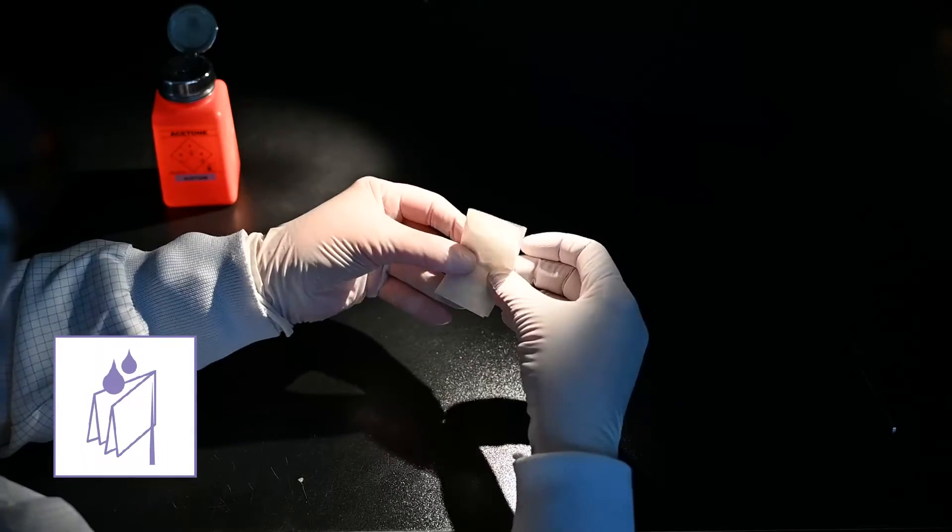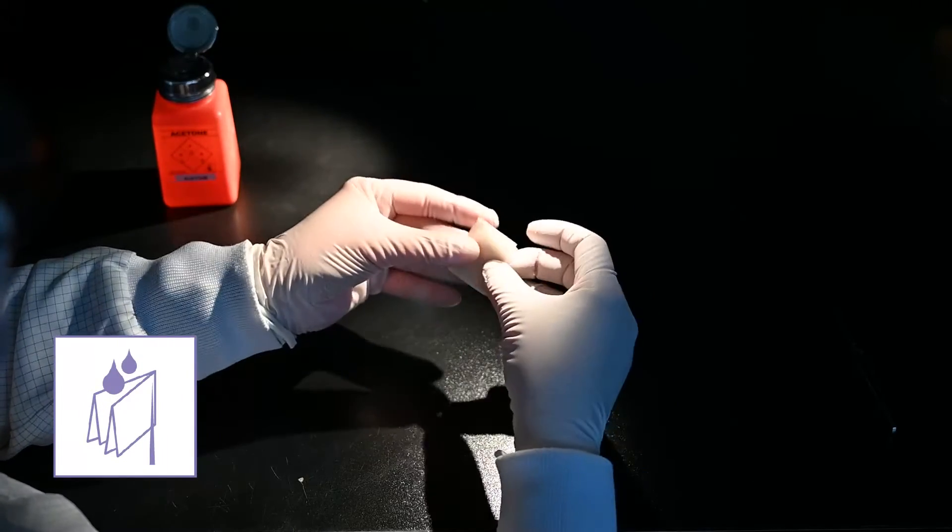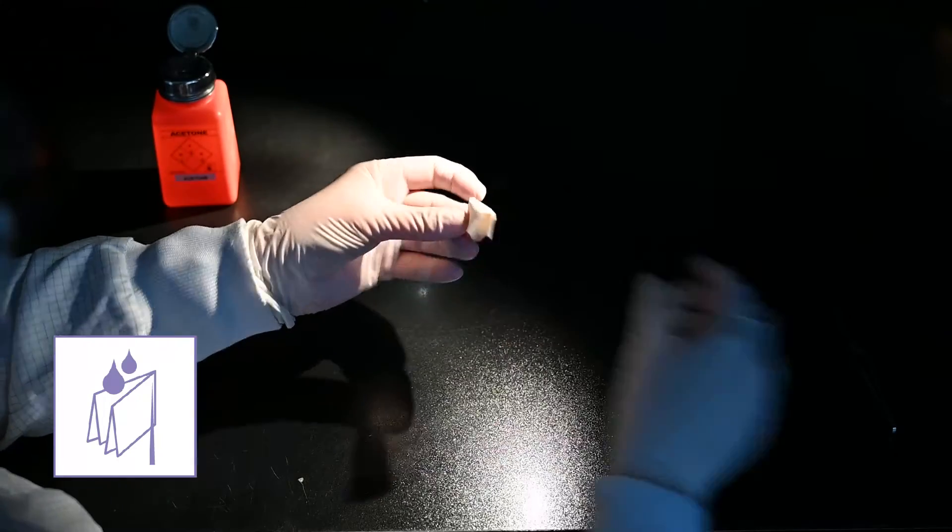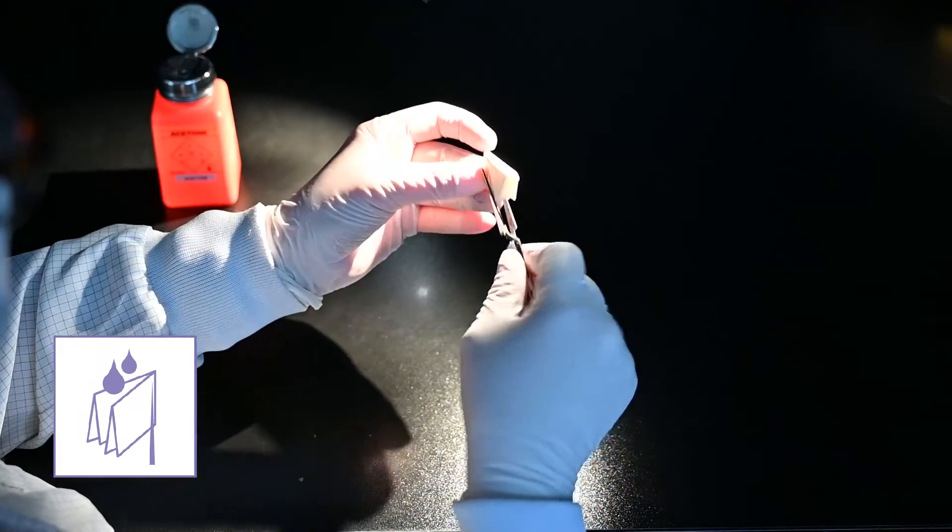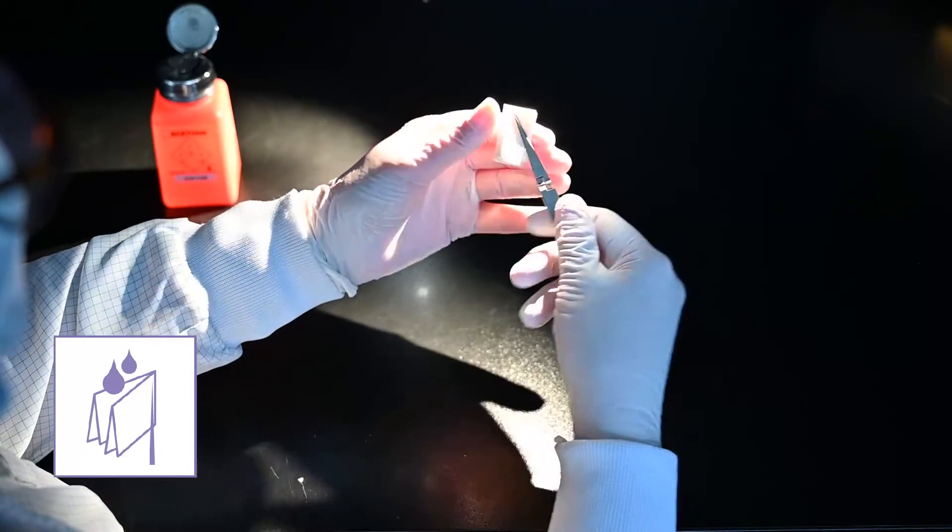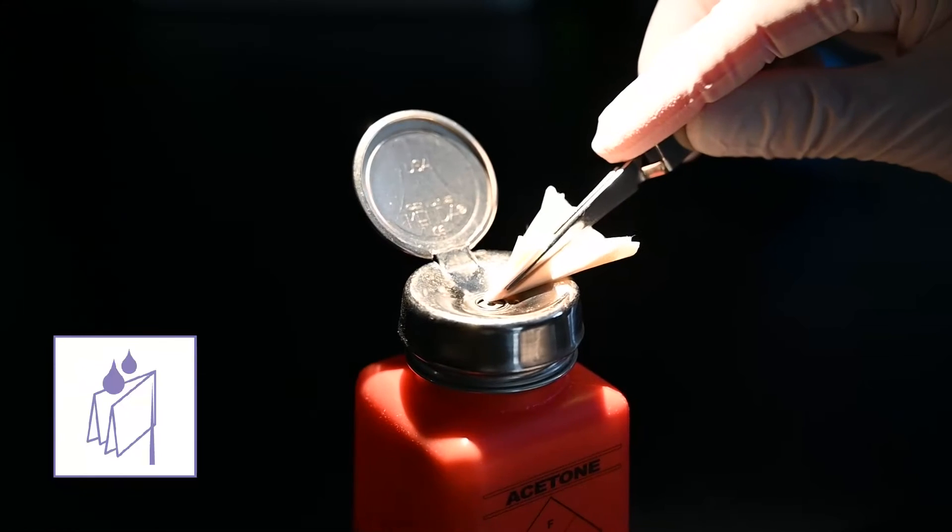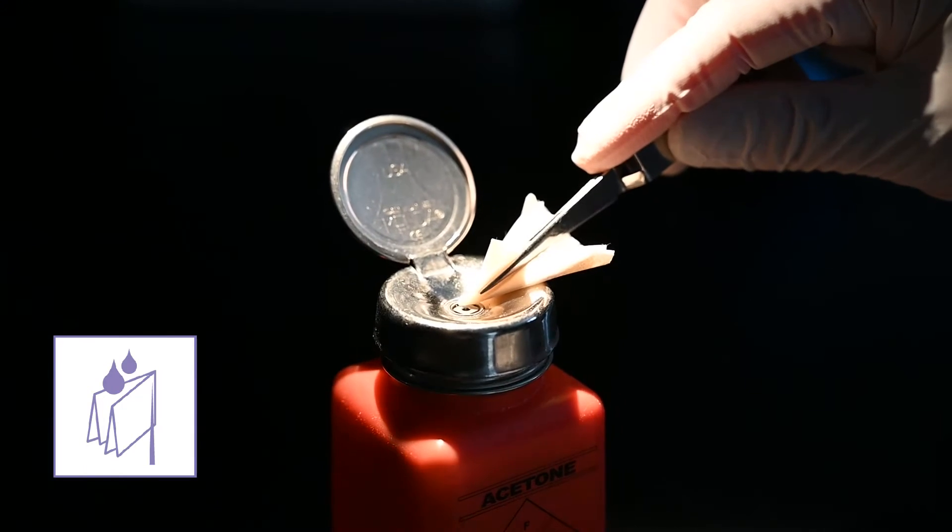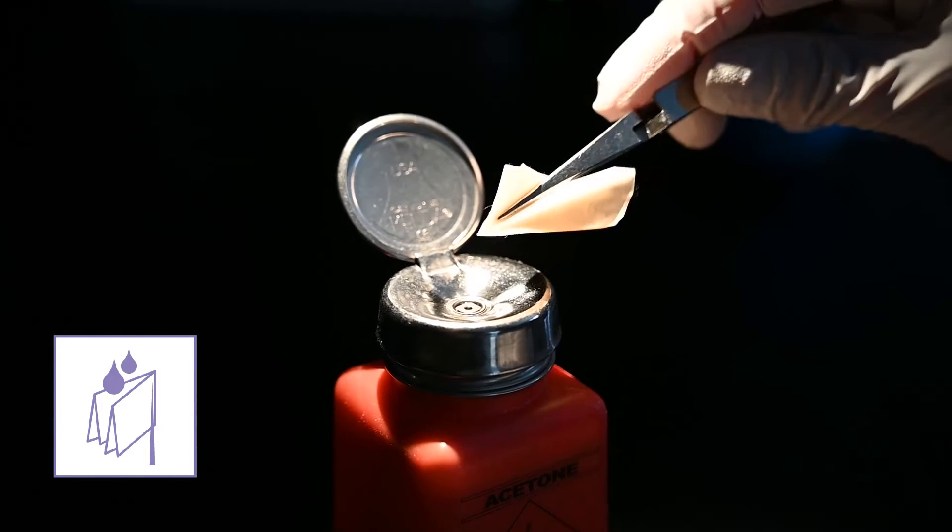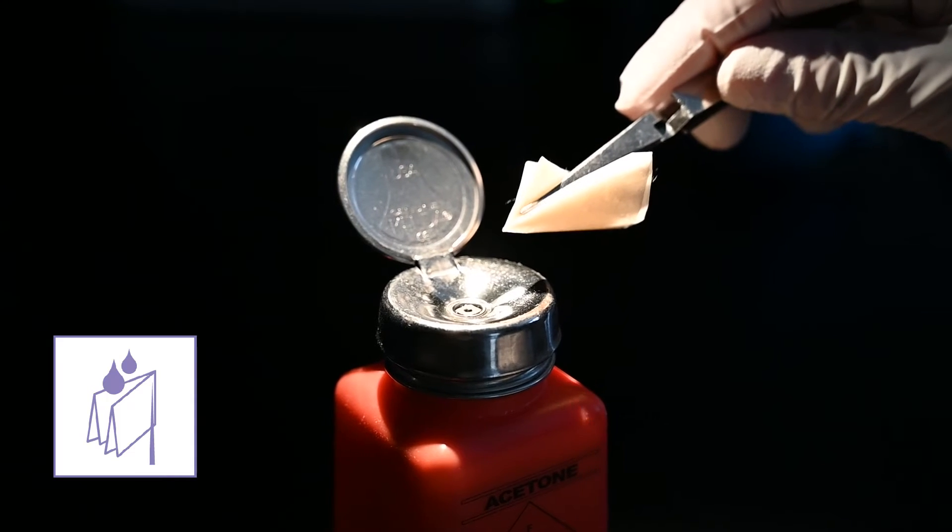Fold the paper several times to make the surface as small as possible and hold it with a pair of tweezers to form a triangle. It goes without saying that the tweezers must not stick out from the paper. Moisten the paper with a small amount of detergent. This works best with a dispenser.